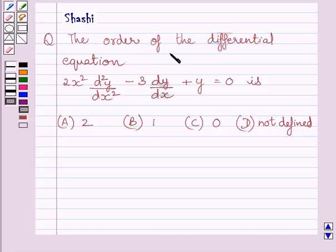the order of the differential equation 2x square multiplied by d square y upon dx square minus 3 dy upon dx plus y is equal to 0 is: A) 2, B) 1, C) 0, D) not defined?